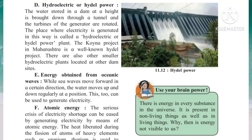The next renewable energy source is hydroelectric or hydro power. Water stored in a dam at a height is brought down through a tunnel, and the turbines of the generator are rotated. As the water falls on the turbine, the turbine starts to rotate and it generates electricity. The place where electricity is generated in this way is called a hydroelectric or hydro power plant.